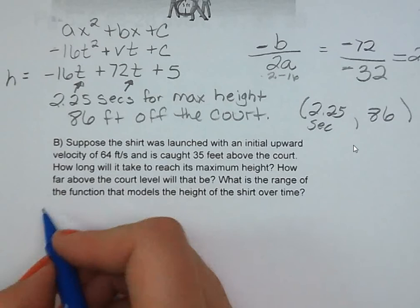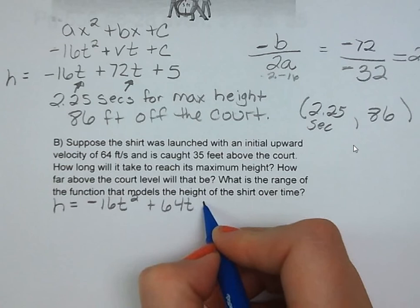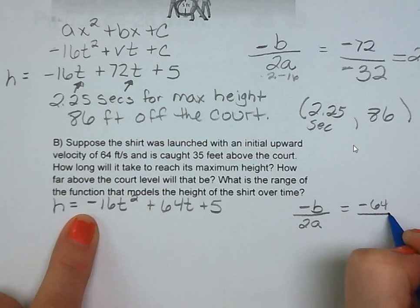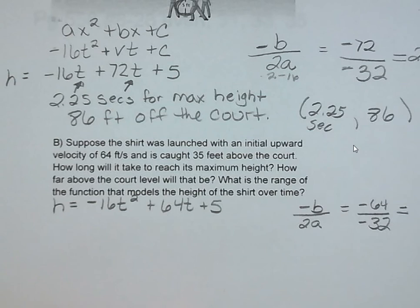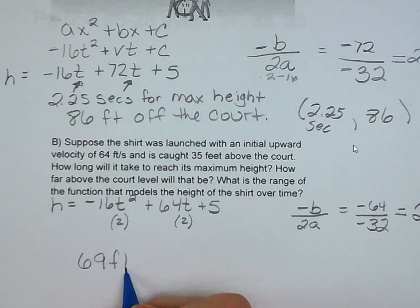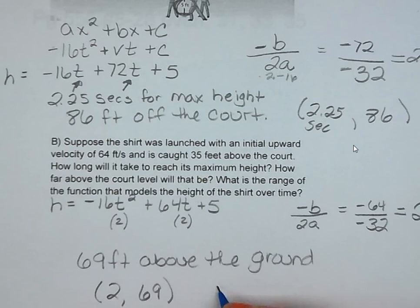Our second question asks, suppose the t-shirt is launched with an upward velocity of 64 feet per second instead, and it's still caught 35 feet above the court. We want to know how long it's going to take to get to that maximum height and how high that is going to be. So we start again with our formula, opposite of b over 2a, so we take negative 64 over negative 32. We find it's going to take 2 seconds to reach that maximum height. We plug that back in for t in our original equation, and we find that after 2 seconds it is 69 feet above the ground. So our range for this t-shirt is going to be between 69 feet and 5 feet.